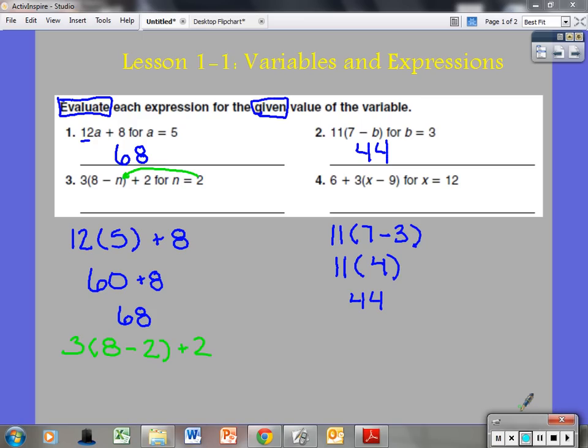So PEMDAS tells me parentheses first. I have 8 minus 2 in parentheses, so I'm going to go 8 minus 2 in the parentheses gives me 6 plus 2. Now this is where we start to get tempted to add the 6 and 2 together, but there's no symbol here, so I have to multiply first. So I go 3 times 6. 3 times 6 is 18. I have 18 plus 2. I now combine those two. 18 plus 2 gives me 20. So hopefully if you paused and you checked, that would be the correct answer.